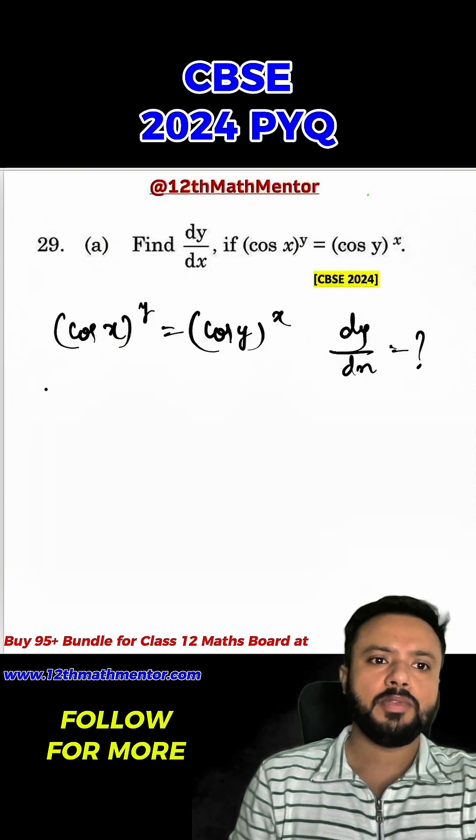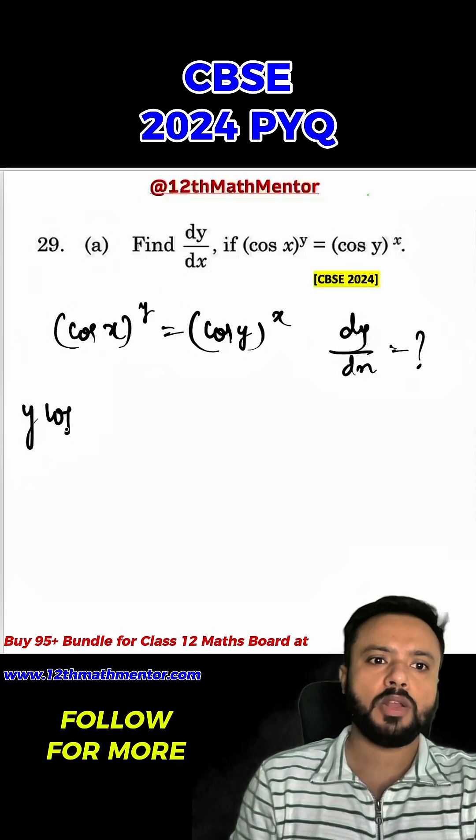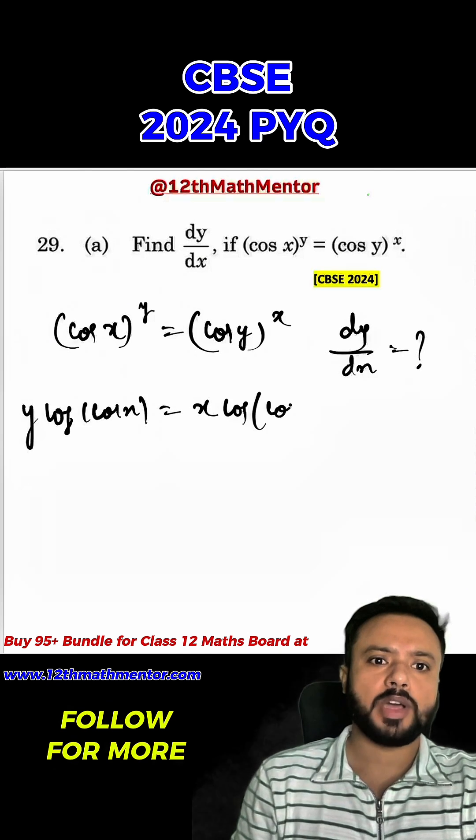To figure out the derivative, first we will take log on both sides. When we take log both sides, we get y log cos x equals to x log cos y.